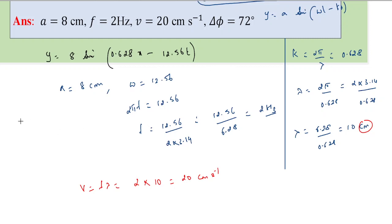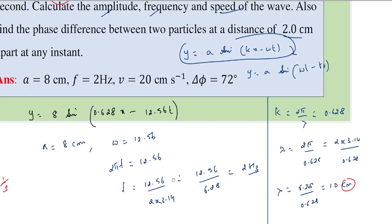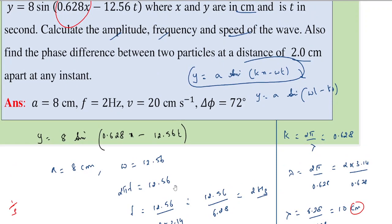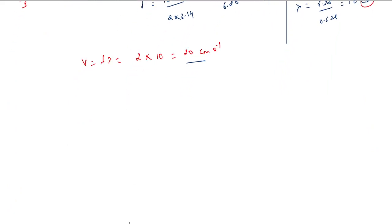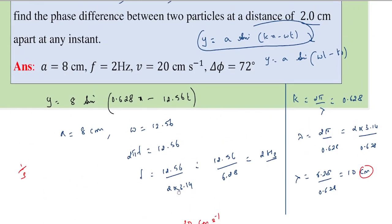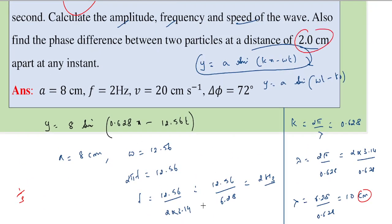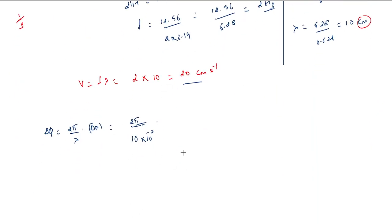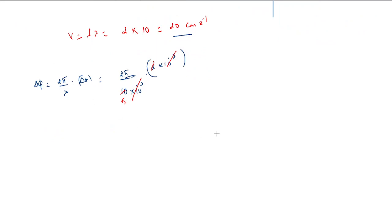Note that hertz is 1/second. The last part: find the phase difference when the distance between two particles is 2 centimeters. We know that phase difference = (2π/λ) × path difference = (2π/10) × 2 = 4π/10 = 2π/5 radians.